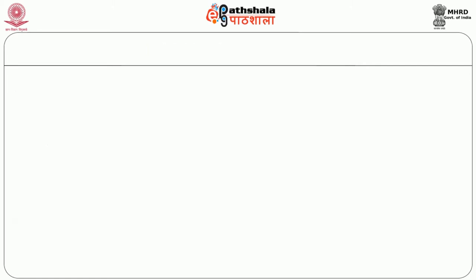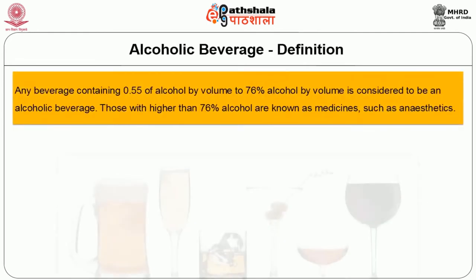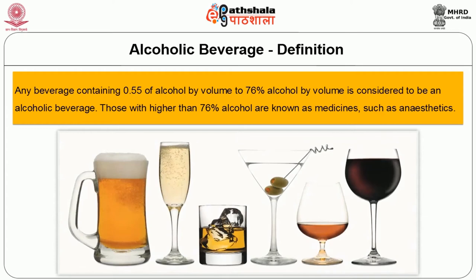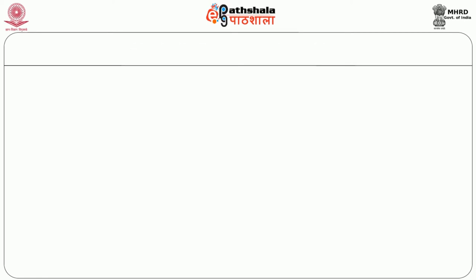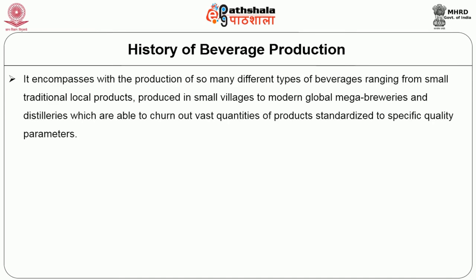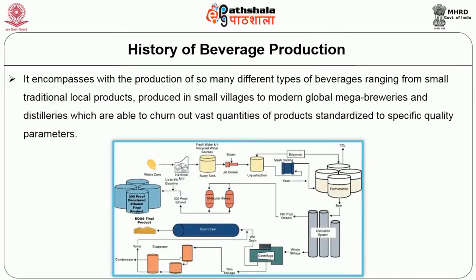Let us see the definition of alcoholic beverage. Any beverage containing 0.5% of alcohol by volume to 76% alcohol by volume is considered to be an alcoholic beverage. Those with higher than 76% alcohol are known as medicines such as anesthetics. The history of beverage production encompasses the production of many different types of beverages, ranging from small traditional local products produced in small villages to modern global mega breweries and distilleries which produce vast quantities of products standardized to specific quality parameters.